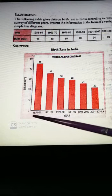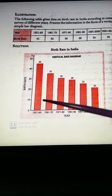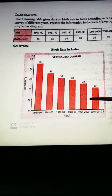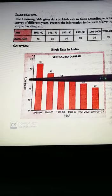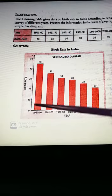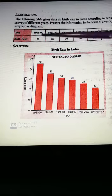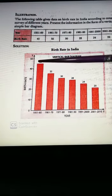So the first centimeter we will leave and the second centimeter will be for the first year, and then leaving the third one, the fourth centimeter for the next year. Likewise, we are taking this, this is the vertical bar diagram, so we have taken like this. Birth rate we are taking on the y-axis and year on the x-axis, then for 1951 to 60 it is 45, so we are taking the value 45.